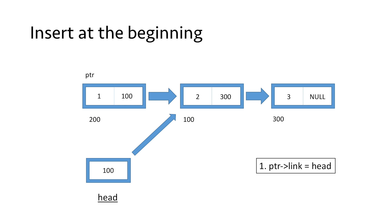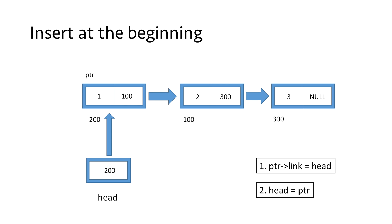The last thing we need to do is point the head pointer to our newly created node, as it will now be the starting of our linked list. To do this, we set head = ptr, which copies the value 200 into head. Thus head is now pointing to our newly created node, which is now the starting of our linked list. We have successfully inserted a node at the beginning of our linked list.